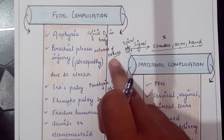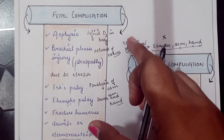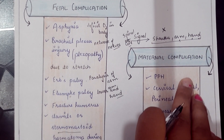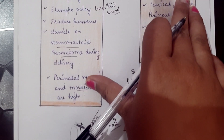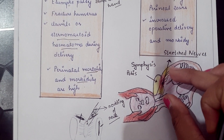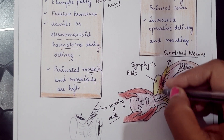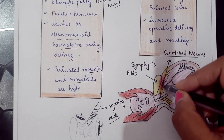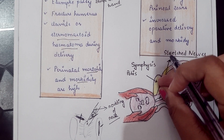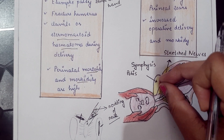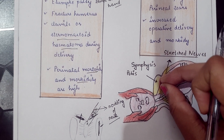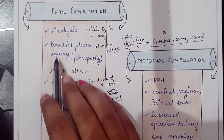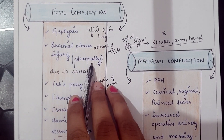Brachial plexus injury: the brachial plexus is the network of nerves that provides signals from the spinal cord to the shoulder, arm, and hand. In shoulder dystocia, the shoulder is impacted behind the symphysis pubis, causing the brachial plexus nerves to be stretched. This stretching causes injury to the nerves, also known as plexopathy.